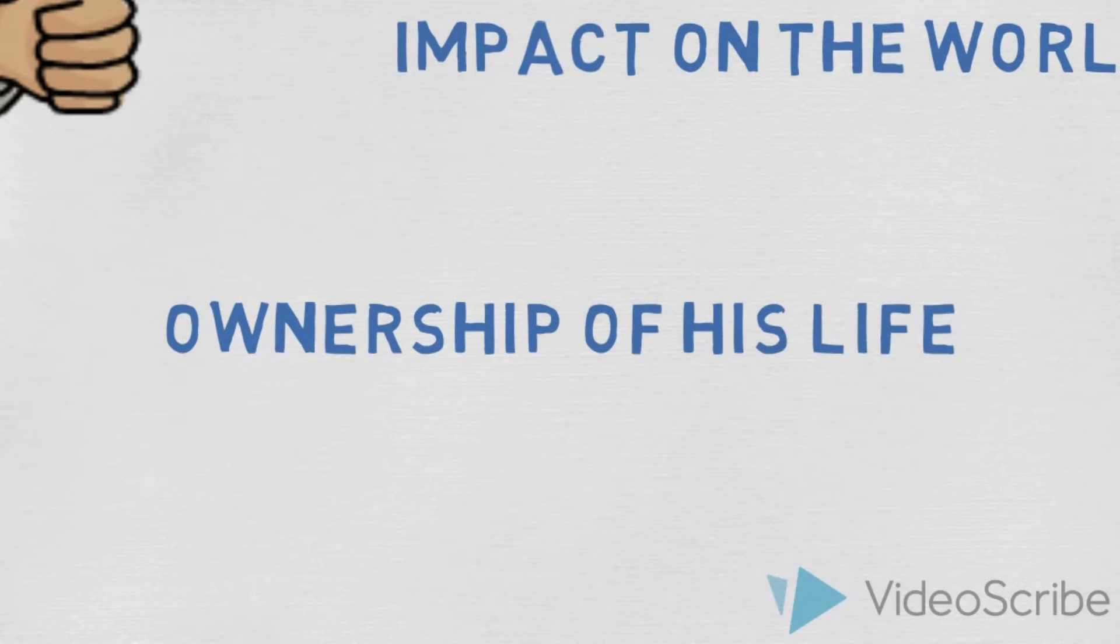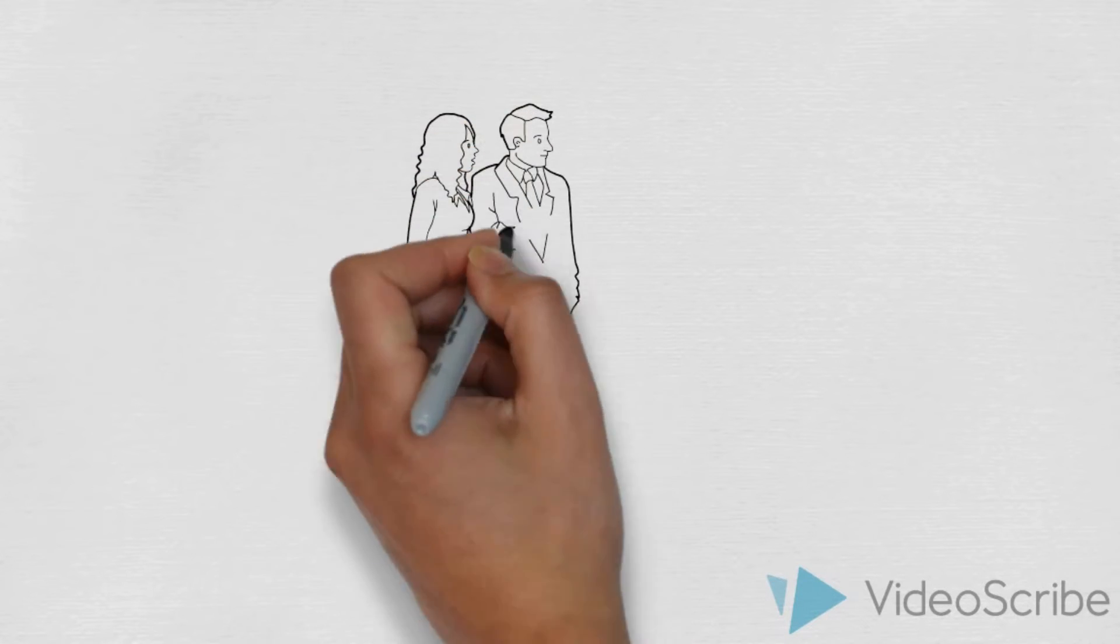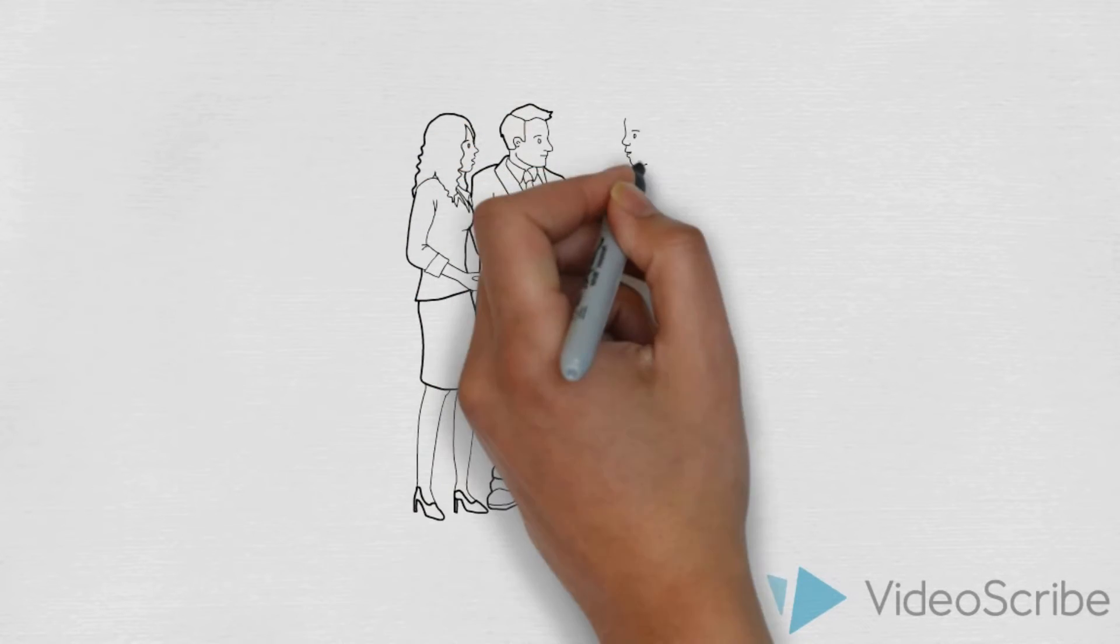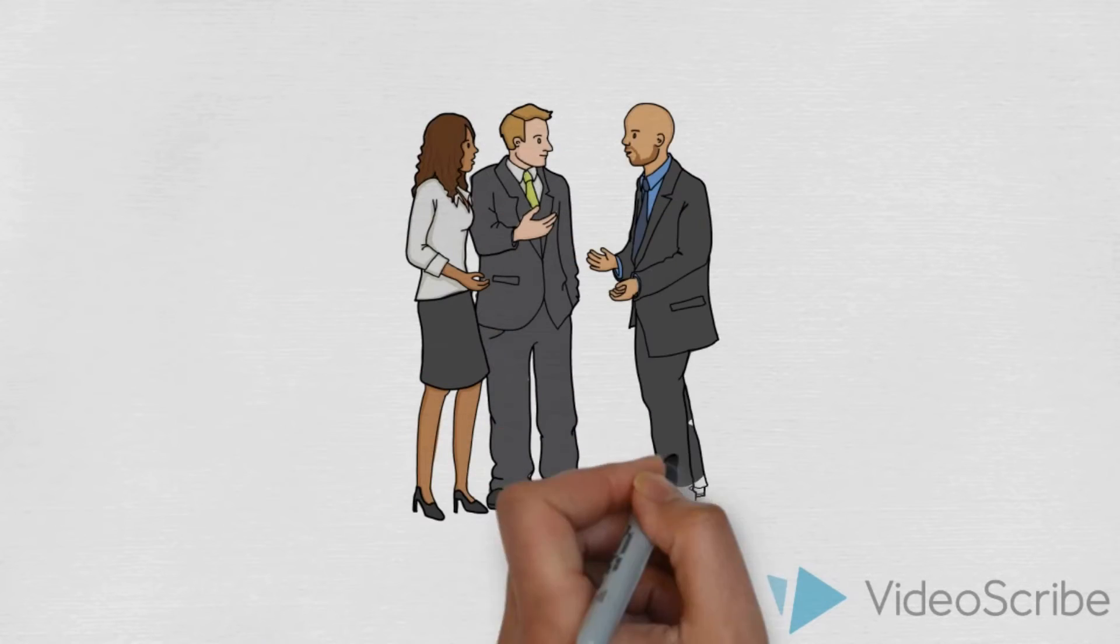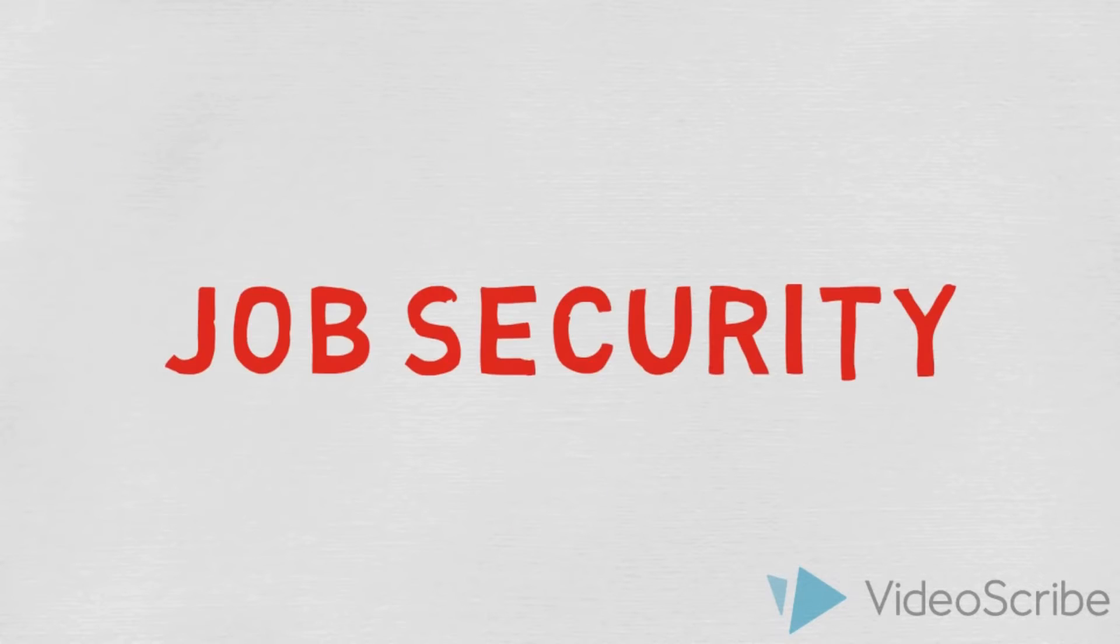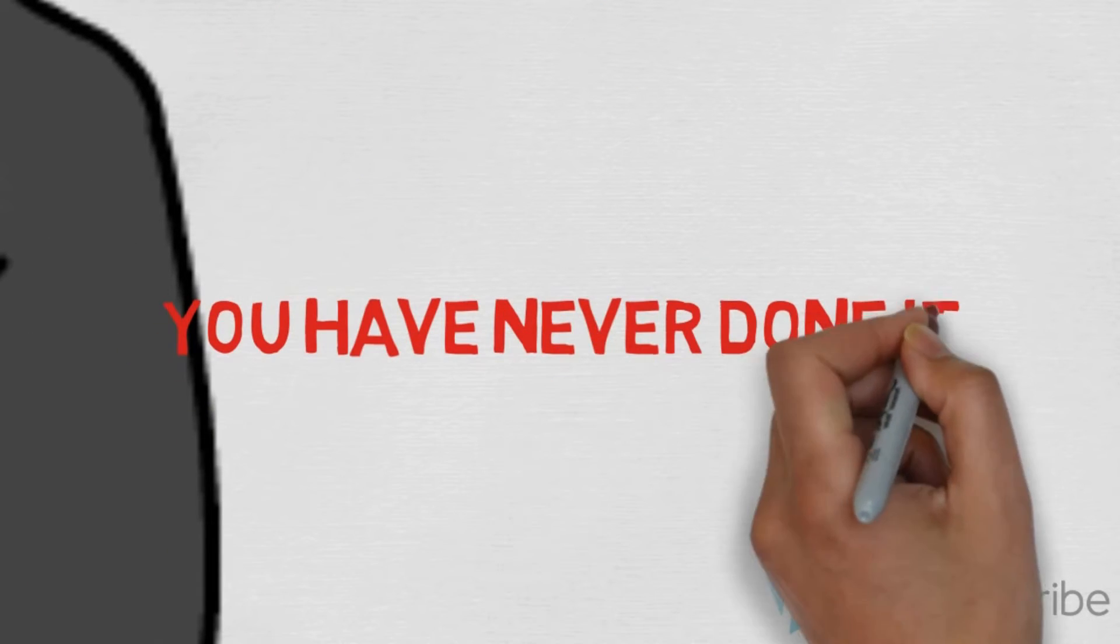His subjective norms are the influence that other people have on him. His peers, in favor or against that decision, might have different opinions, and it depends who influences him most. People might say: think about your job security. You've never been an entrepreneur before. Why start now?